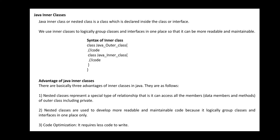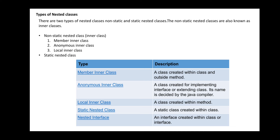Java inner classes are defined as one class defined within another class. The types of inner classes or nested classes are: member inner class, anonymous inner class, local inner class, static nested class, and nested interface. A member inner class is a class created within a class and outside a method. An anonymous inner class is created for implementing an interface or extending a class — its name is decided by the Java compiler. A local inner class is a class created within a method. A static nested class is a static class created within another class. A nested interface is an interface created within a class or another interface.